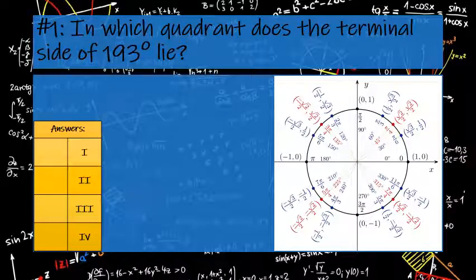All right, so question number one: in which quadrant does the terminal side of 193 degrees lie?